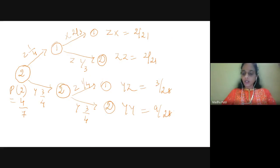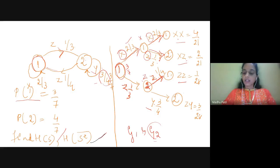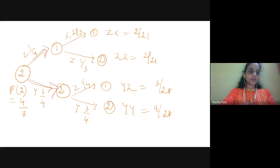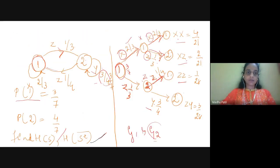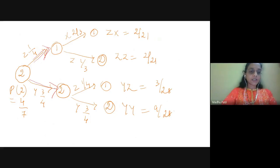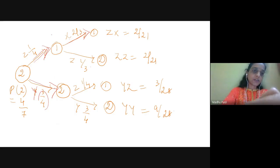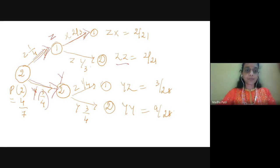This is the tree diagram when in state 1. When the source is in state 2, it goes to state 1 emitting z with probability 1/4, or remains in state 2 emitting y with probability 3/4. From state 1, it emits x with probability 2/3 or z with probability 1/3. At the end of the first symbol interval, symbols emitted are z and y. At the end of the second symbol interval: zx, zz, yz, yy.